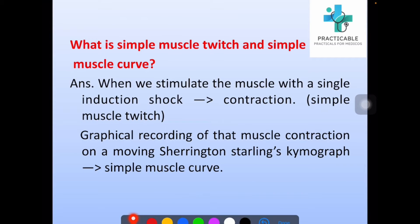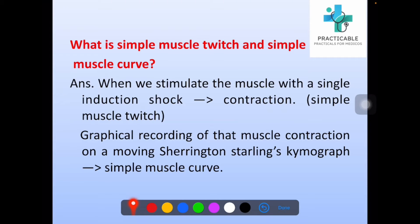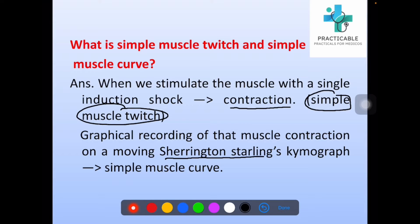What is simple muscle twitch and simple muscle curve? When we stimulate the muscle with a single induction shock, it shows contraction — that is simple muscle twitch. That momentary twitch-like contraction of the muscle is known as simple muscle twitch, and the graphical recording of that muscle contraction on a moving Sherrington-Starling kymograph is known as simple muscle curve.